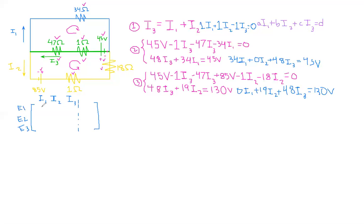So our first equation, our coefficients are 1 I1, 1 I2, and negative 1 I3, and the sum of those equals zero. For the second one, we have 34, 0, and 48, and that equals 45. And then here we have 0, 19, 48 equals 130. So this is our matrix.